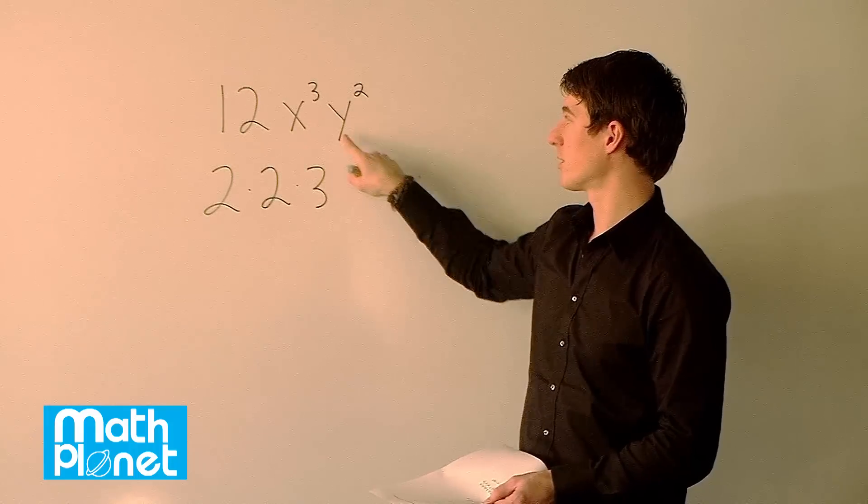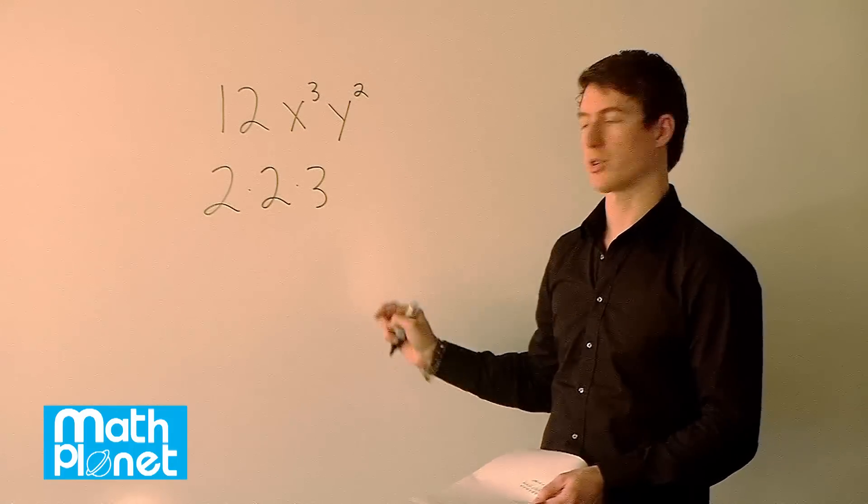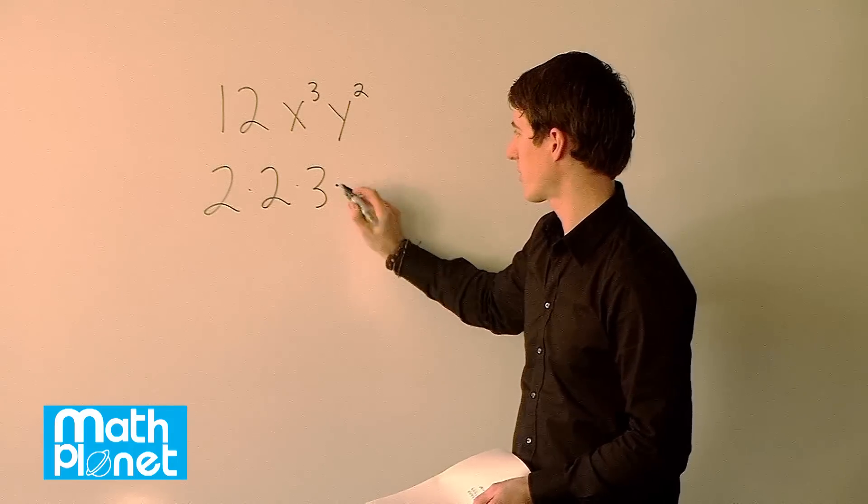Now let's do the same thing here where we just expand these. Instead of having exponents, we just write all the factors out. So we're still multiplying. It's the same term.